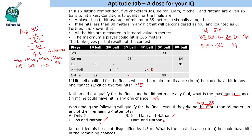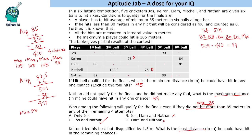Next question: Karon tried his best but was disqualified by 1.5 meters. What is the least distance he could have hit in the remaining chances? Disqualified by 1.5 means his average is 83.5, giving a total of 501. One hit is a foul counted as 0, and one hit is 84. Subtracting: 501 − 84 = 417 needed in four chances. Maximizing the other three at 105 each gives 315. So the minimum hit is 417 − 315 = 100 meters, achieved in the fourth turn.